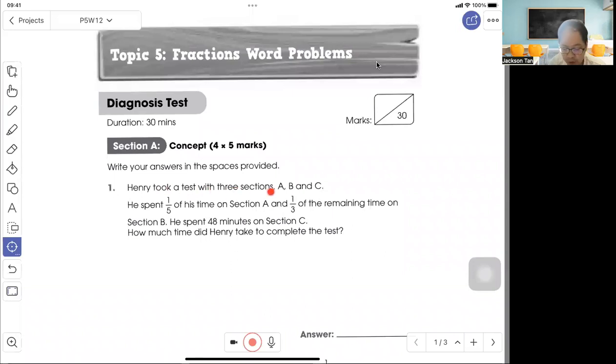Question 1. Henry took a test with three sections A, B, and C. He spent one-fifth of the time on section A and one-third of the remaining time on section B.